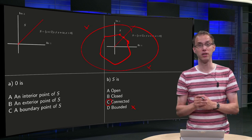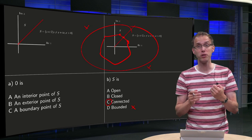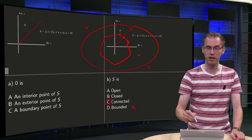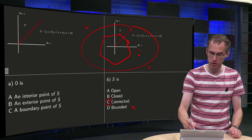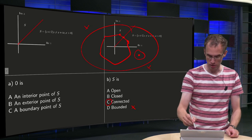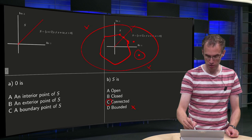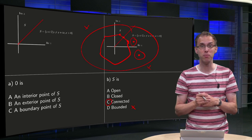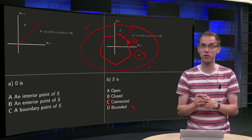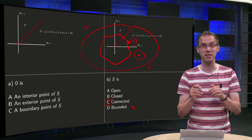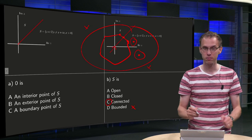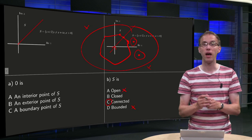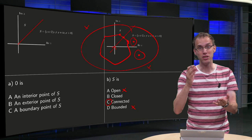How about open and closed? A set S is open if all points of S are interior points. Many points of S are interior points — for example this one over here, we can draw a small disk around it such that all points are inside S, or take the point over here, we can also make a small disk around it with all points inside S. So S seems pretty open. But there is one problem: the origin is in S but it is not an interior point. So our set S is not open.